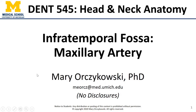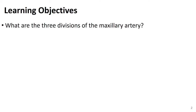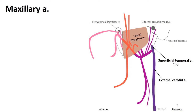Hello everyone, this is Dr. O. Here we're moving into the maxillary artery, and specifically we're going to talk about the three divisions of it and branches of the first two divisions. The external carotid artery heads up in the neck, deep in the parotid gland, where it bifurcates into its two terminal branches: the superficial temporal artery and the maxillary artery.